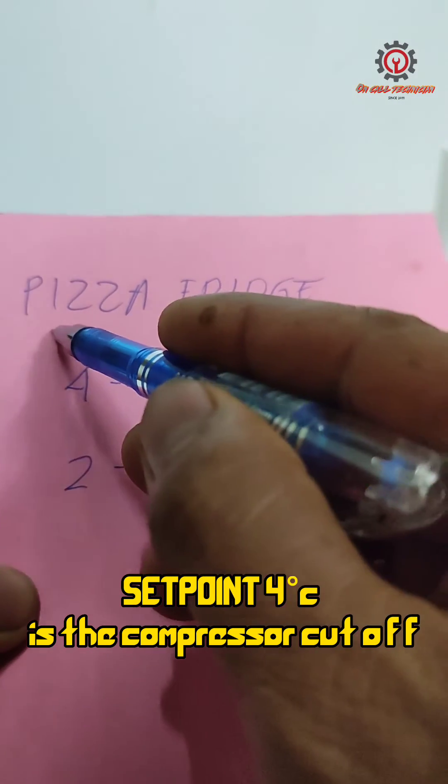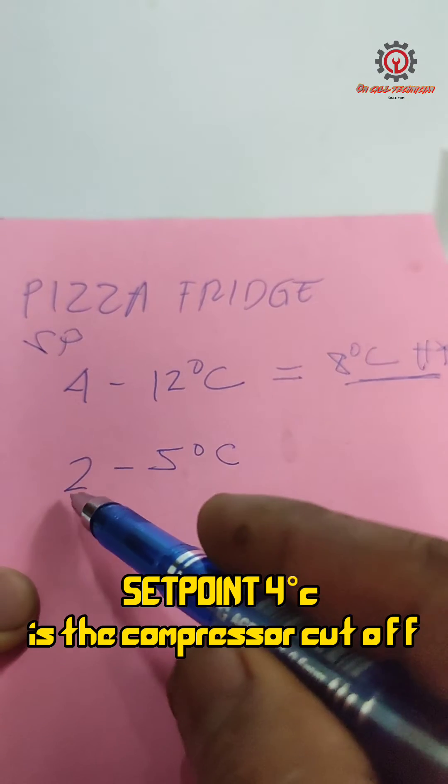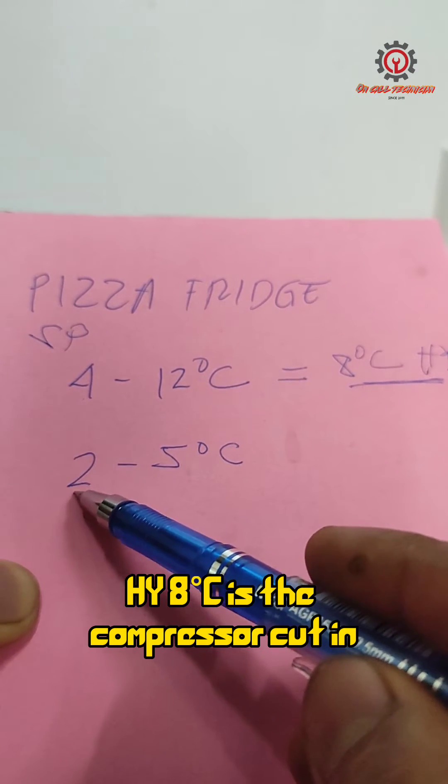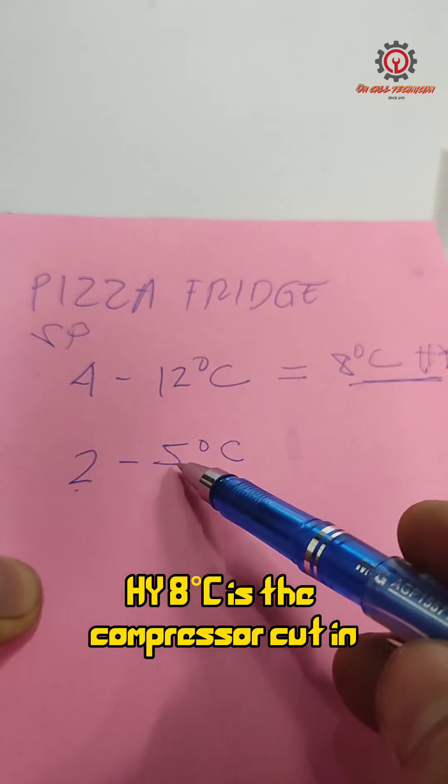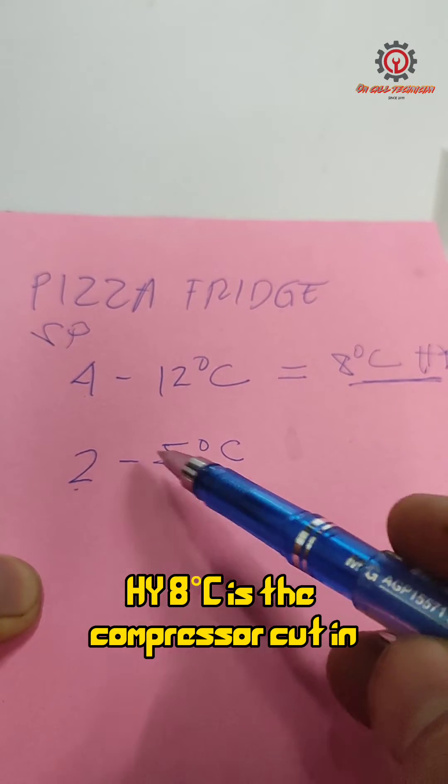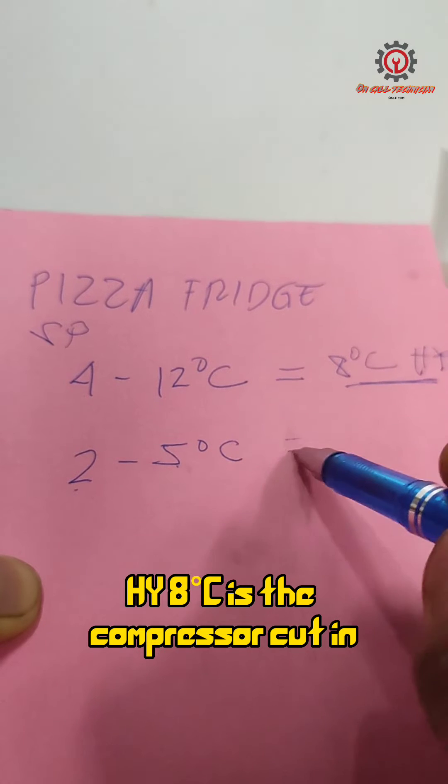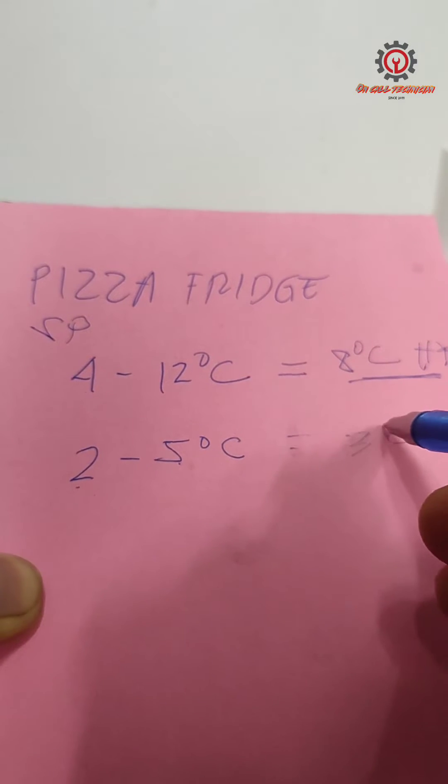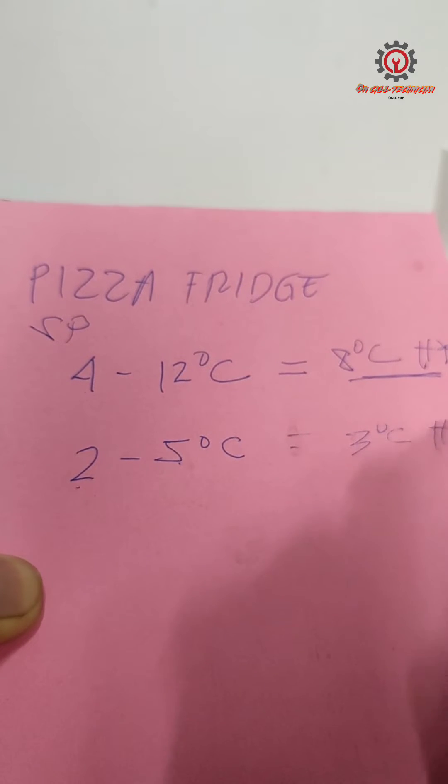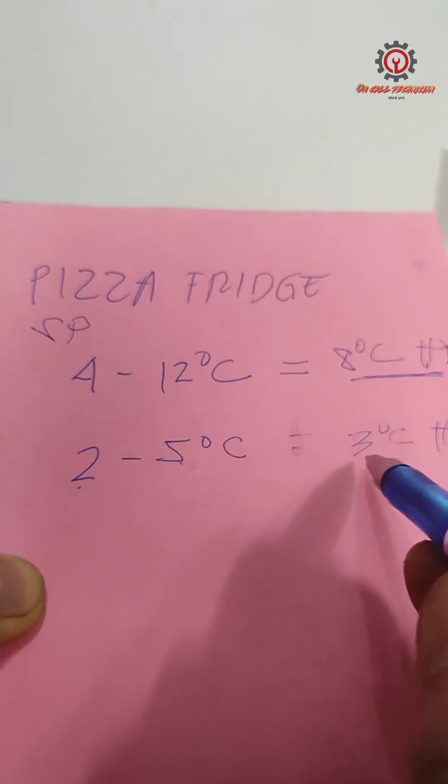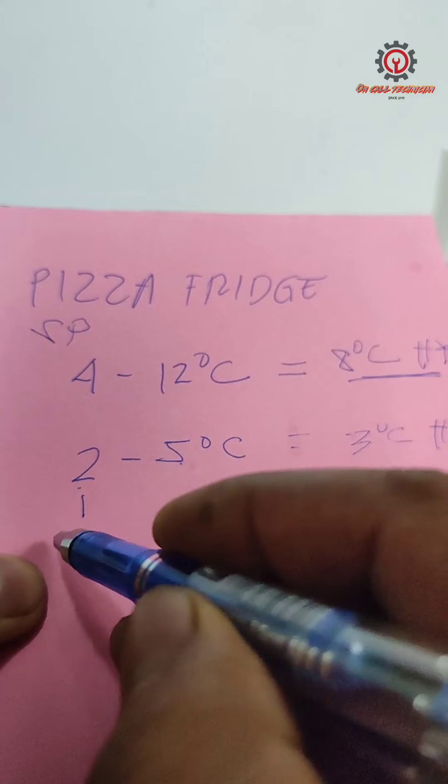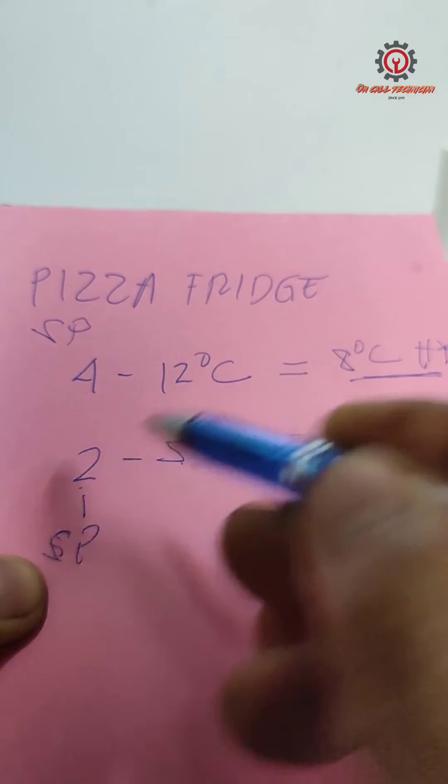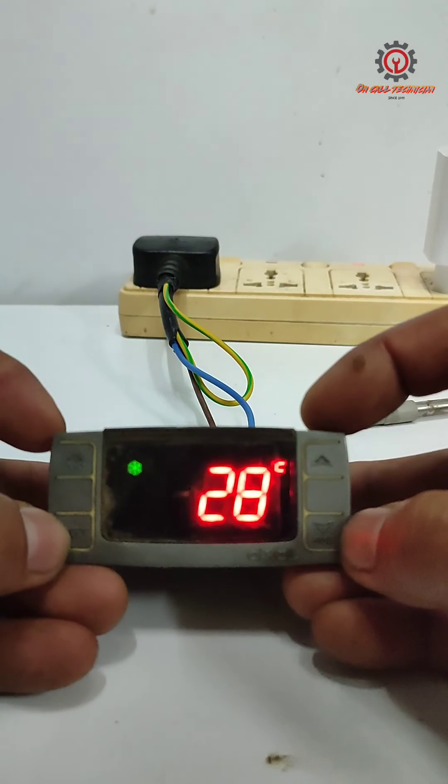The 4 here is the setpoint. So he wanted it to be 2 to 5 degrees Celsius. Now going to minus this: 5 minus 2 is 3 degrees Celsius. So this will be our HY, the differential, and this will be our setpoint. Now we're going to actually do the setup here.